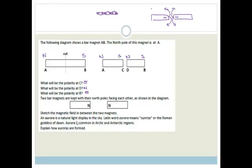Finally it says, an aurora is a natural light to appear in the sky. Latin word for aurora means sunrise, or the Roman goddess of dawn. Aurora is common in Arctic and Antarctic regions. It says, explain how auroras are formed. Now, this is kind of an extension question, so I'm going to explain it to you. Basically what happens, auroras are formed when the particles in the air come into contact with the electromagnetic radiation from the sun. So basically, the electromagnetic radiation from the sun interferes with the magnetic field around the earth. And when that happens, the light gets distorted and auroras are formed.